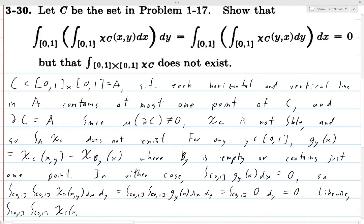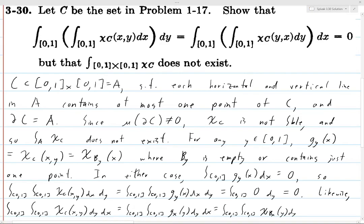Likewise, for the iterated integral ∫∫ χ_C(x,y) dy dx, what we do is integrate over 0 to 1 with x fixed, choosing y, giving us ∫₀¹ χ_{B_x}(y) dy dx. Each B_x is either empty or contains one point, so the integral of χ_{B_x}(y) dy is always zero. We're integrating the zero function with respect to x, so we get zero.